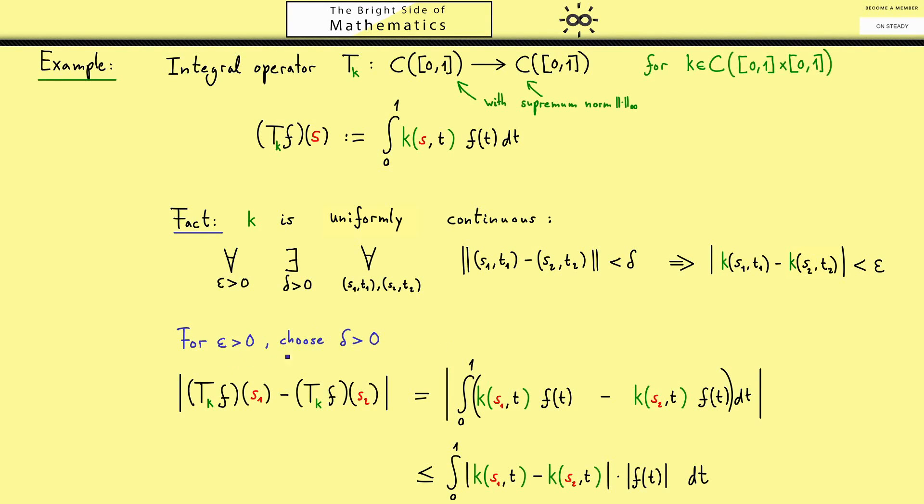With this we have everything we need because this one here is less than the supremum norm of f, and this one by the uniform continuity of k can be as small as we want. Exactly this is what we should formally write. For a given epsilon greater than zero, we choose the delta such that this holds. Therefore we can choose s_1, s_2 from the unit interval such that the distance is less than delta, and this is less than epsilon times the supremum norm. Because the supremum norm of f is just a constant, we know that this function is indeed continuous.